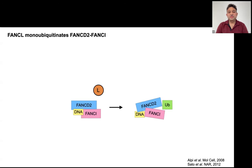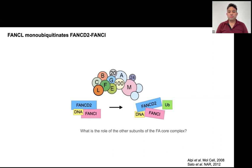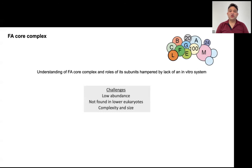The FA core complex is much larger than many other E3s, and it is likely that the complex architecture of this multi-subunit E3, like the FA core complex, allows extensive regulation to make sure that the correct proteins are modified at the correct time and place in the cell. Previously, it was shown that purified FANCL, the subunit which harbors the E3 ligase activity within the FA core complex, is sufficient to monoubiquitinate FANCD2 in the presence of DNA in a site-specific manner. And this ubiquitinated FANCD2 within the heterodimer is enough to drive the pathway forward. But mutation in any one of the FA core complex subunits can abolish FANCD2 ubiquitination and thus lead to defective DNA repair and disease.